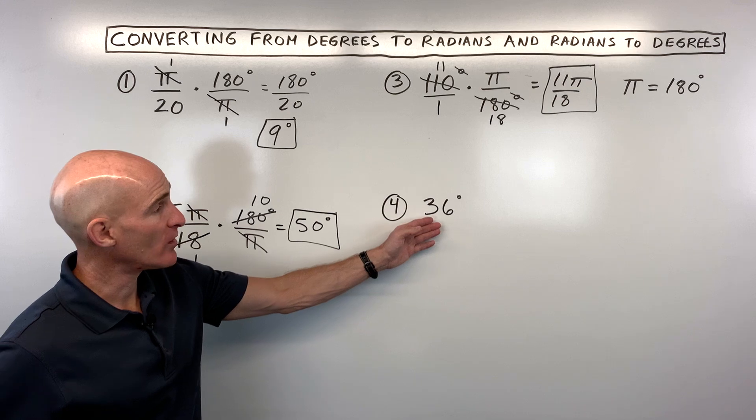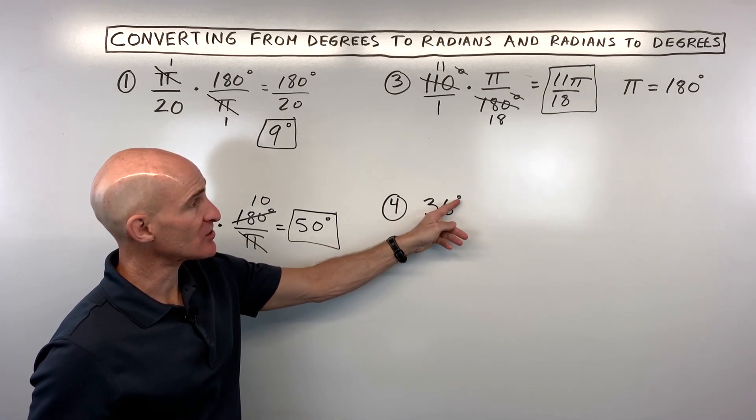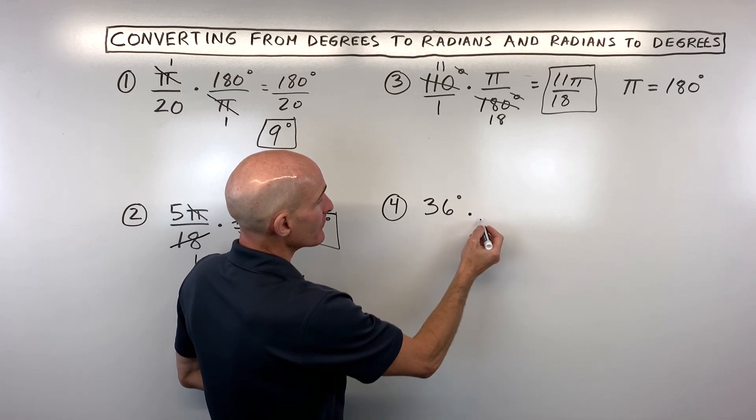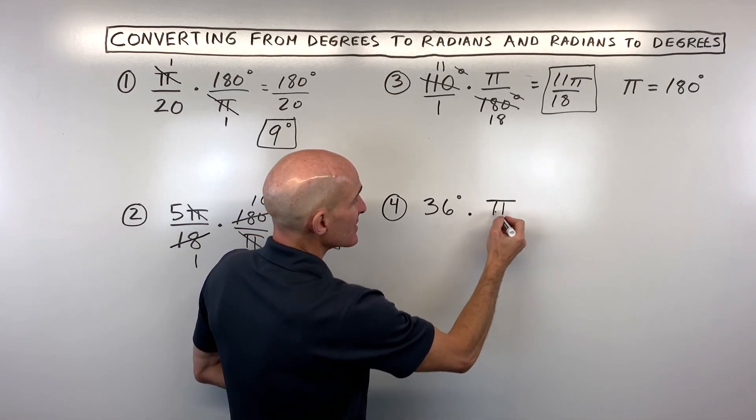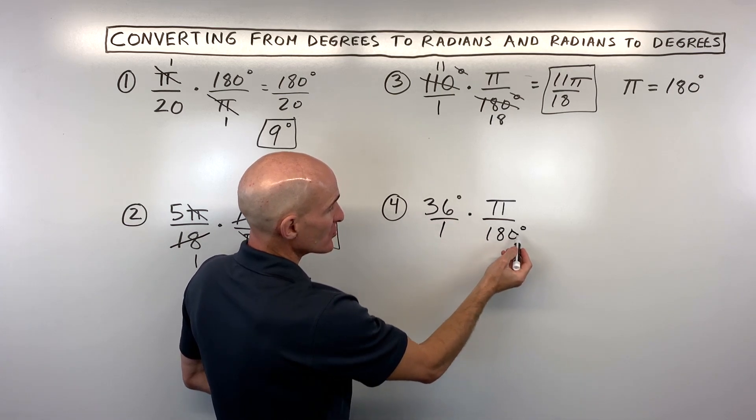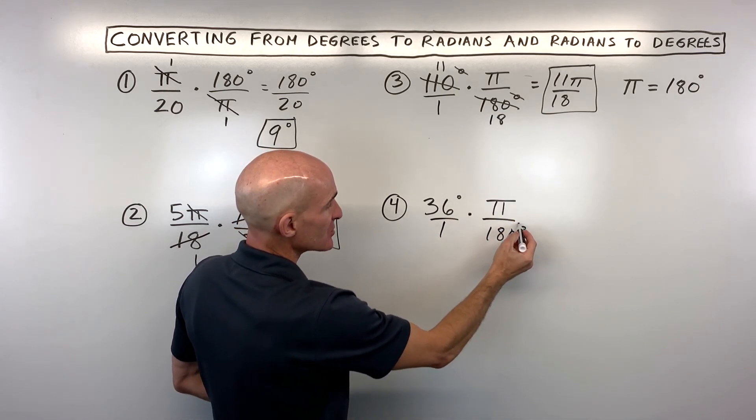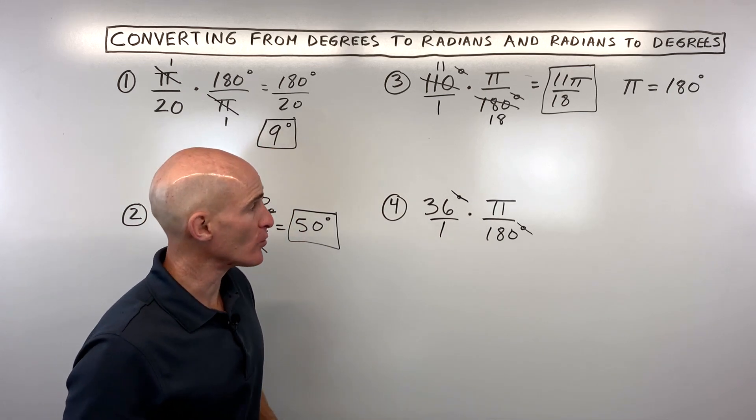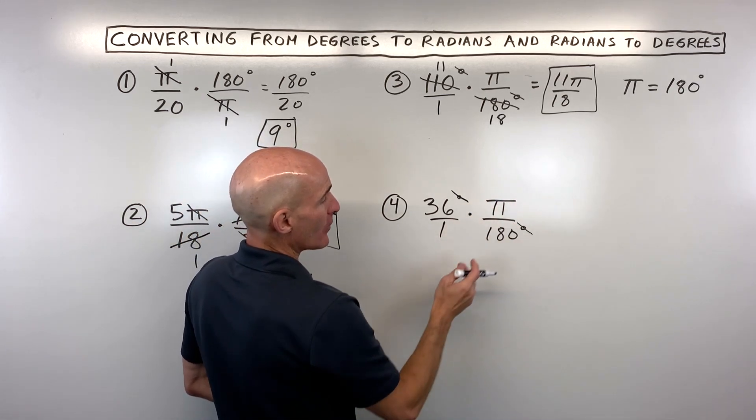Okay, last example. See if you can try this one. We're going from degrees, 36 degrees, to radians. So what do we want to multiply by here? Well, you're going to set this up as times pi over 180. And the reason I chose this instead of the reciprocal is that so the degree units in the denominator cancel with the degree units in the numerator. And we're going to be left with pi radians.